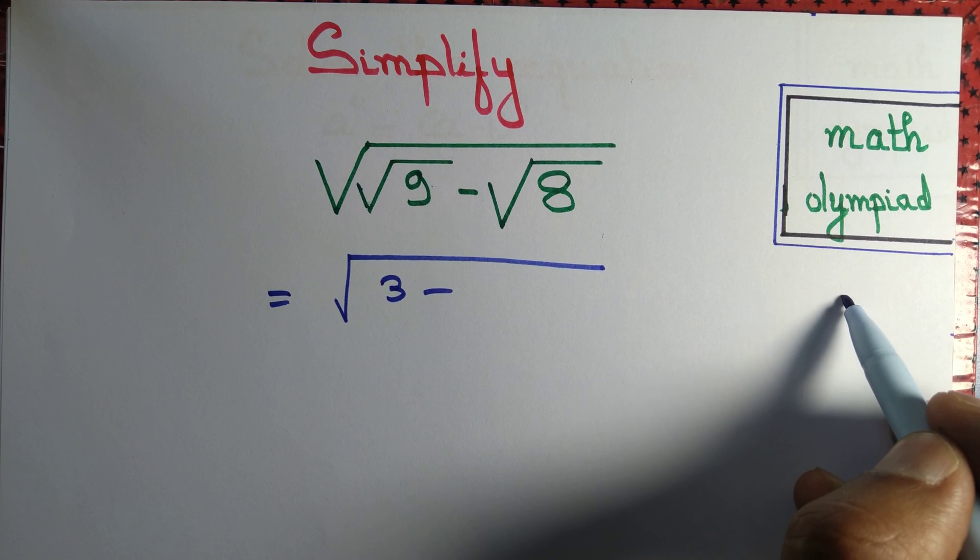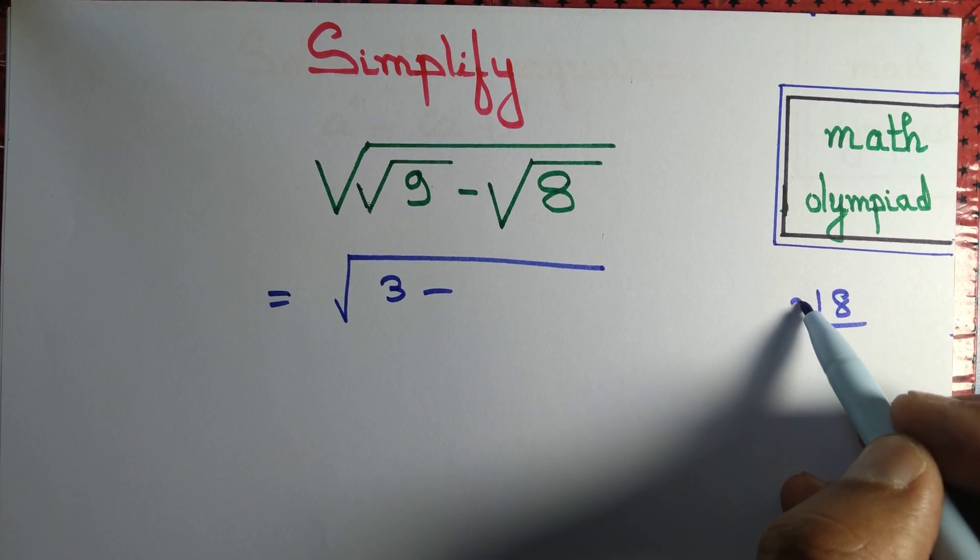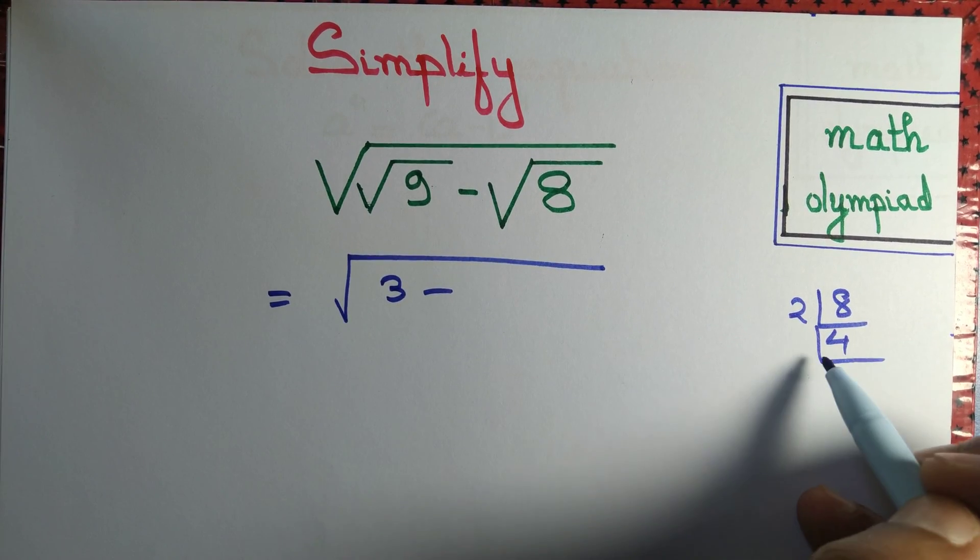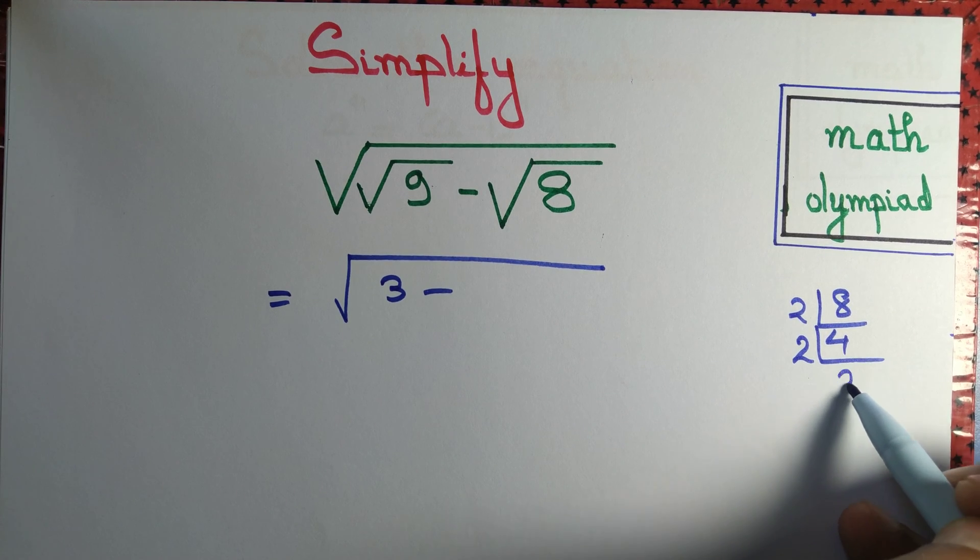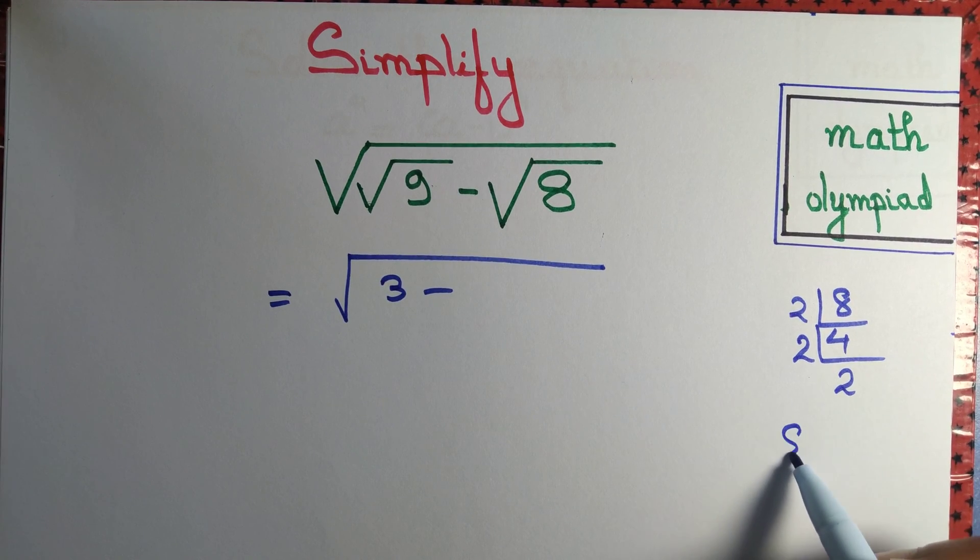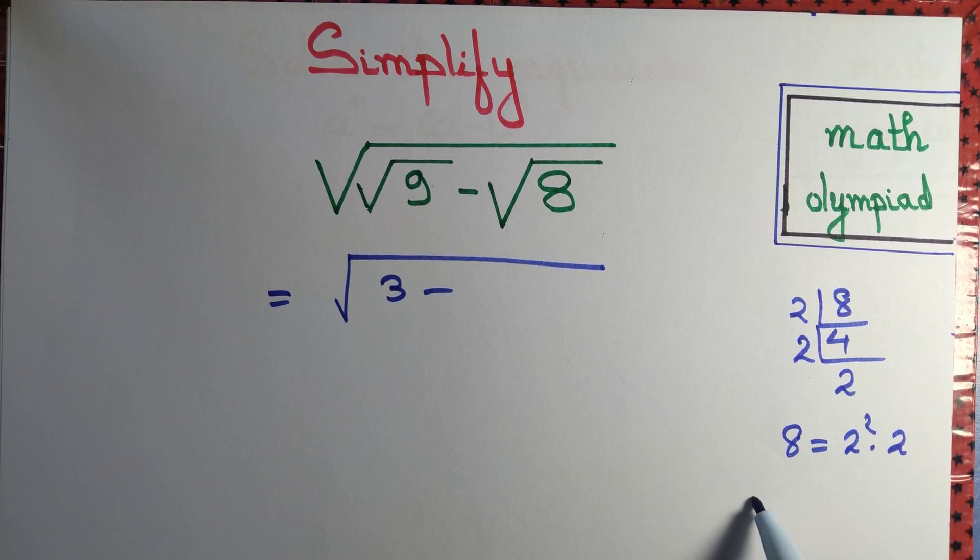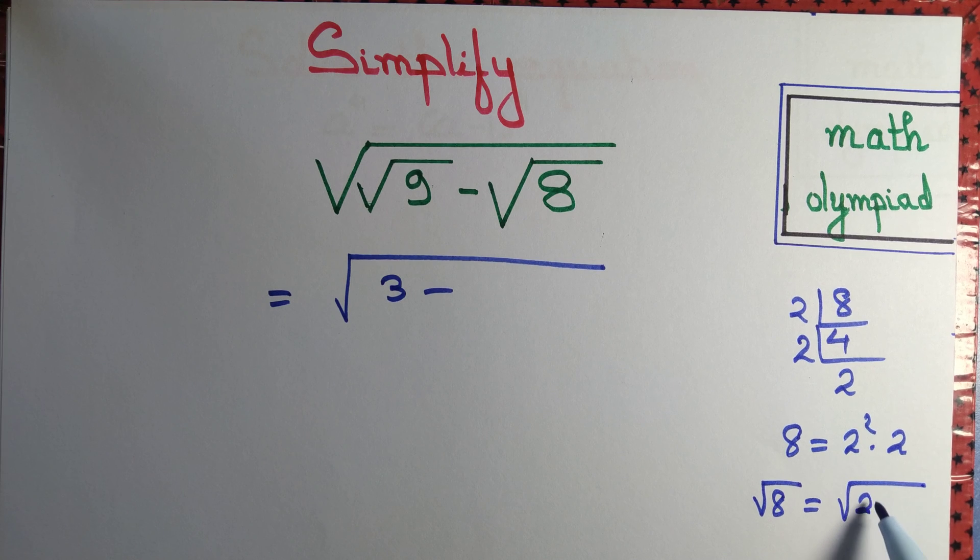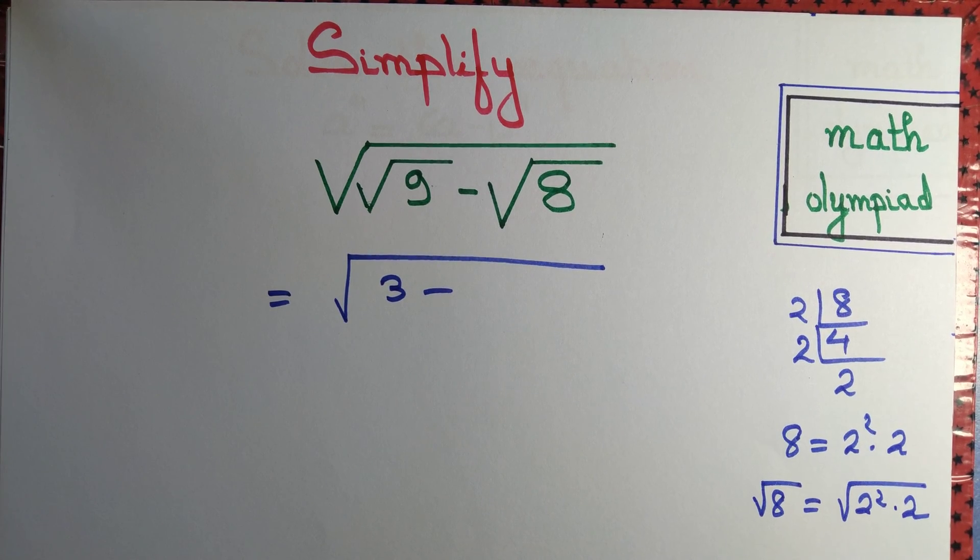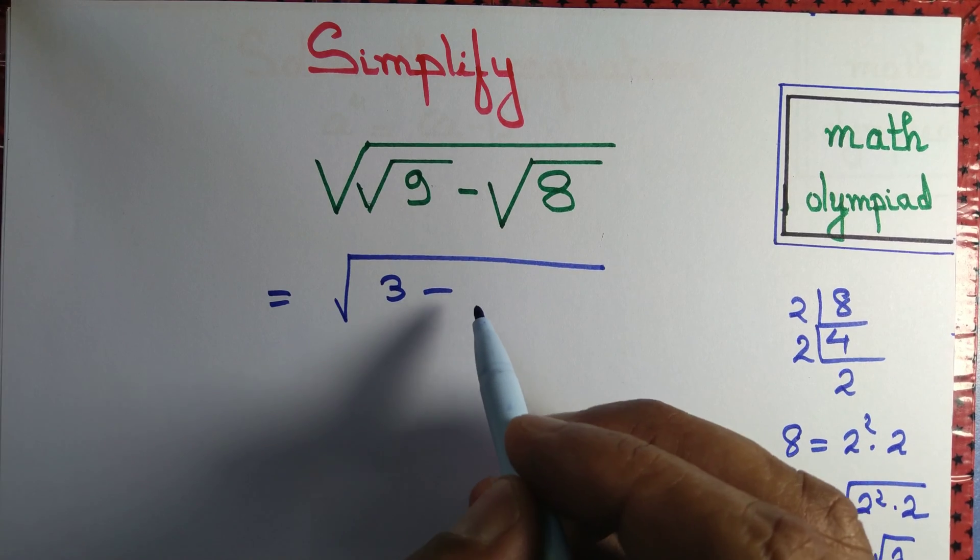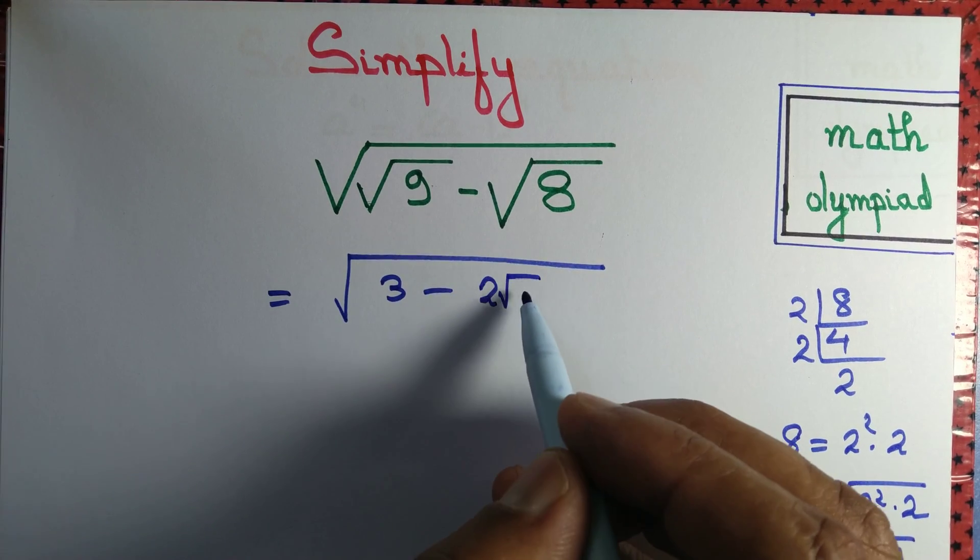Root 8, we can factorize 8 as 2 into 4 is 8. And 4 can be written as 2 into 2. So 8 equals 2 square into 2. So root 8 equals root over 2 square into 2, and that's equal to 2 root 2. So root 8 equals 2 root 2.